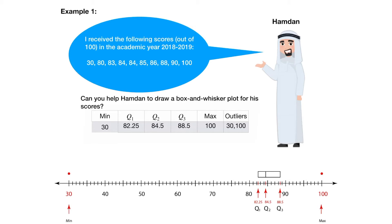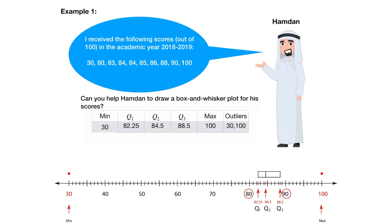Now we want to draw the left-hand and the right-hand whiskers. The left-hand whisker starts at Q1 and the right-hand whisker starts at Q3. We need to know where each whisker ends. To do that, we go back to the ordered dataset and cross out the outliers. As we mentioned, 30 and 100 are the outliers, so we cross them out. Now the smallest value is 80 and the largest value is 90. We plot 80 and 90 on the number line. We draw the left-hand whisker that starts at Q1 and ends at 80, and the right-hand whisker that starts at Q3 and ends at 90.